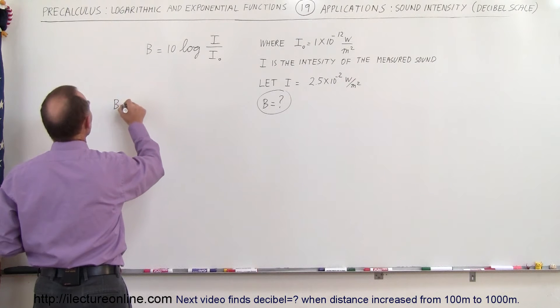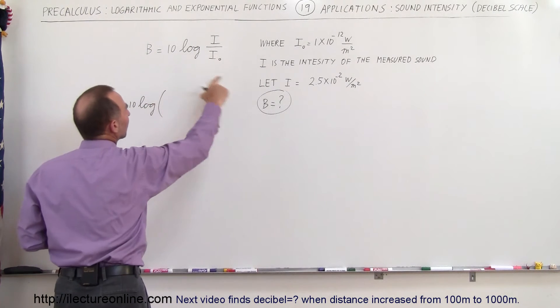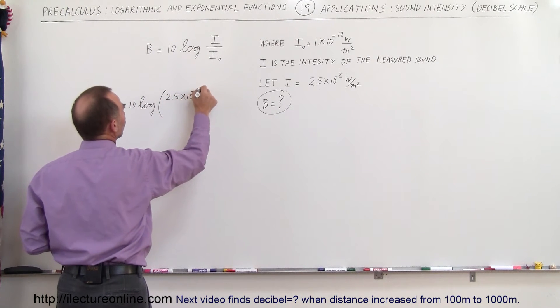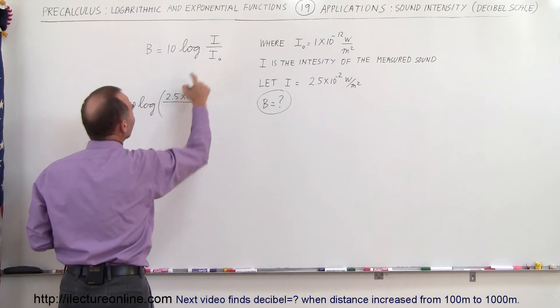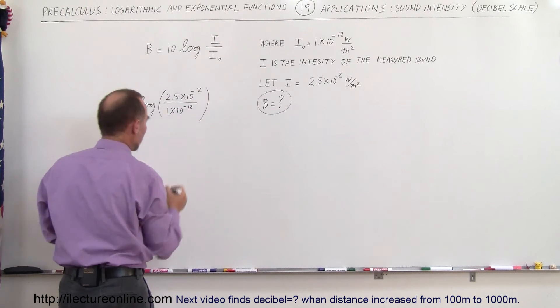So B is going to be equal to 10 times the log of the ratio of the intensity of the sound measure, which is 2.5 times 10 to the minus 2 watts per square meter, divided by the base intensity, which is 1 times 10 to the minus 12 watts per square meter.